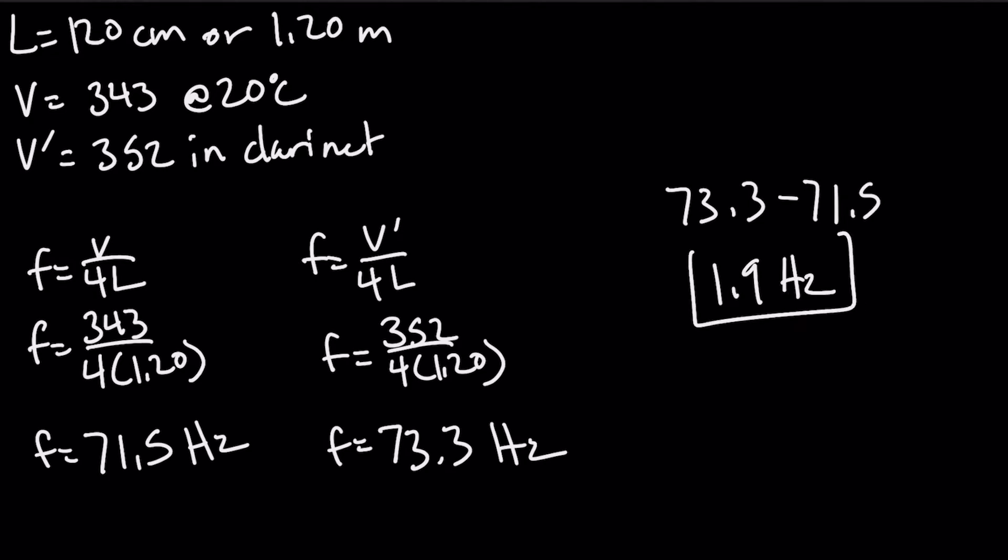The hardest part of this question, in my opinion, is just knowing which equation to use. We use this equation because it details the frequency in an open-closed tube. From this we can find the frequency of each and then take the difference. It's a simple problem, but people can get mixed up by using a different equation if they're thinking of a different tube system.